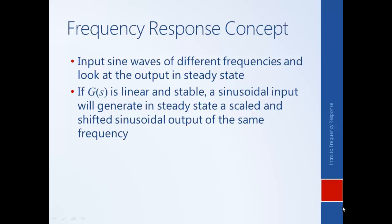This makes sense if we think back to what we learned at the beginning of the class. In general, a system's response has a homogeneous part and a particular part — a part due to the forcing input and a part due to the natural response of the system. The particular solution will have the same form as the forcing input, so since we're forcing the system with a sinusoidal input of a particular frequency, we would expect the particular solution to also be a sinusoid of the same frequency.